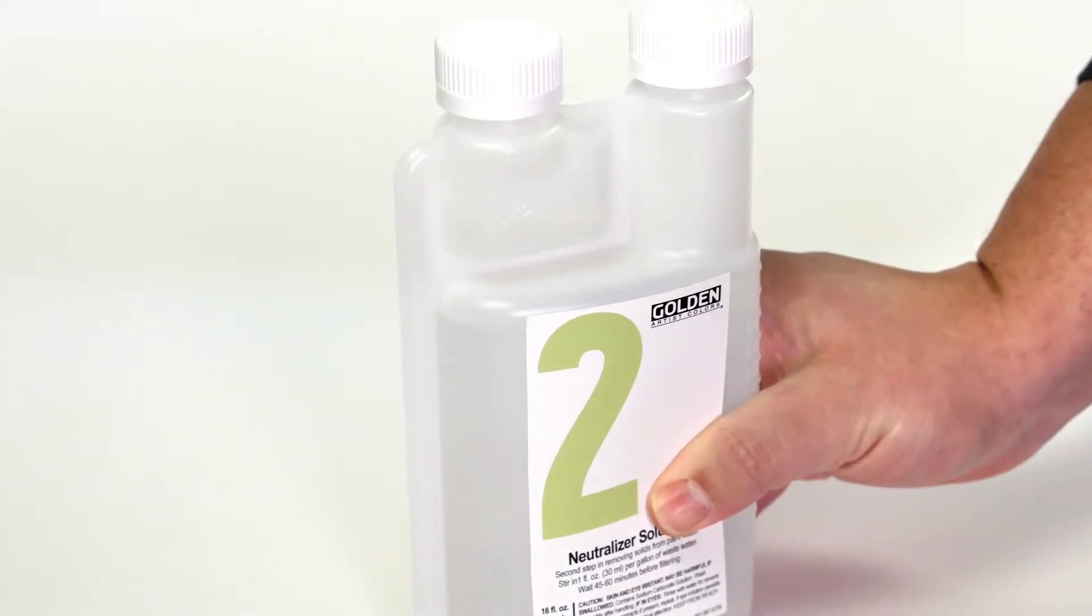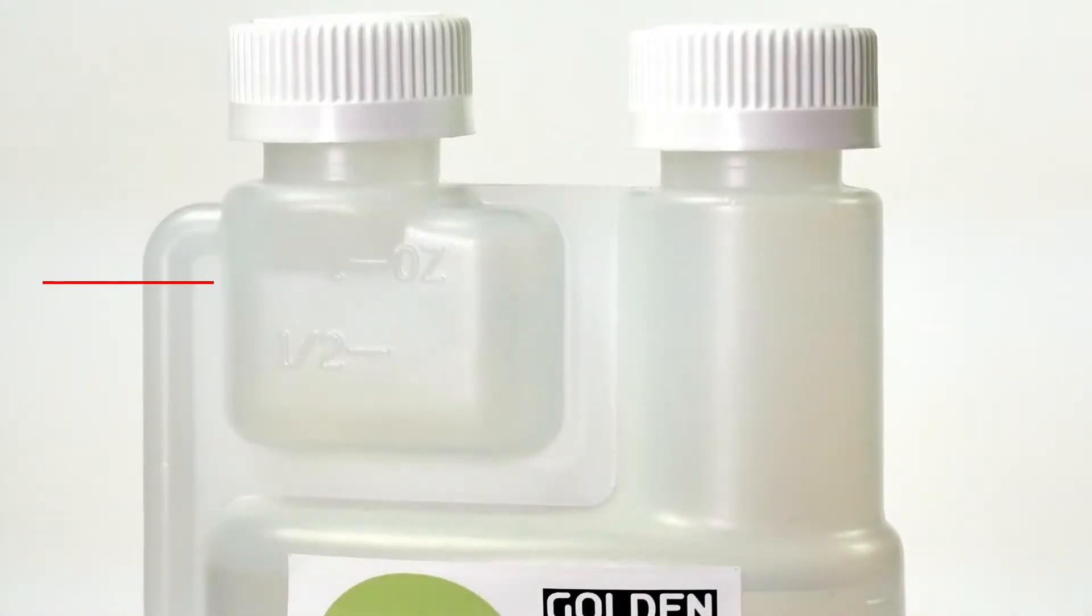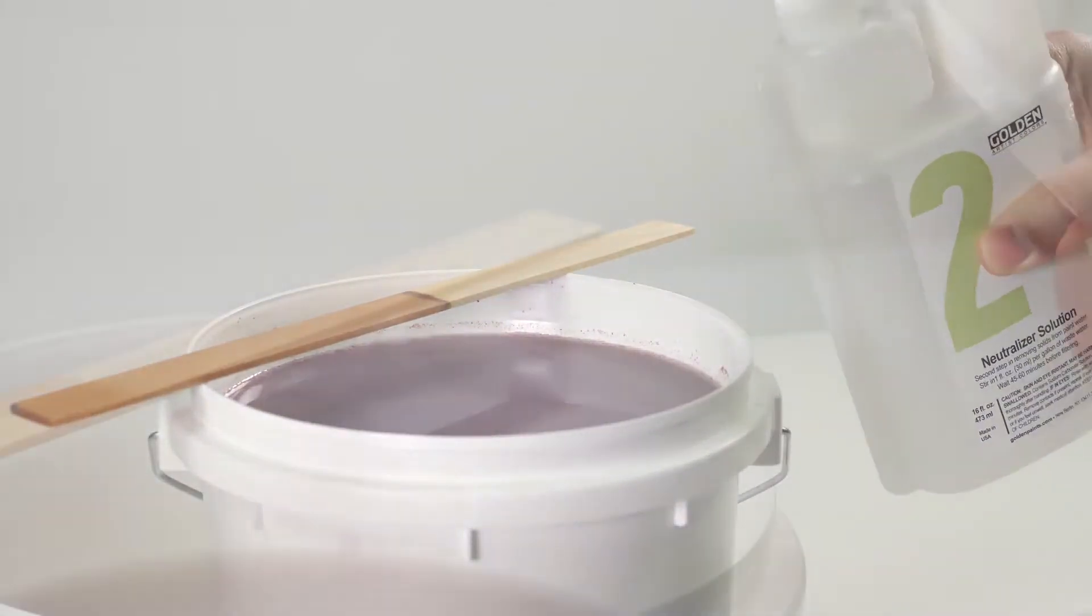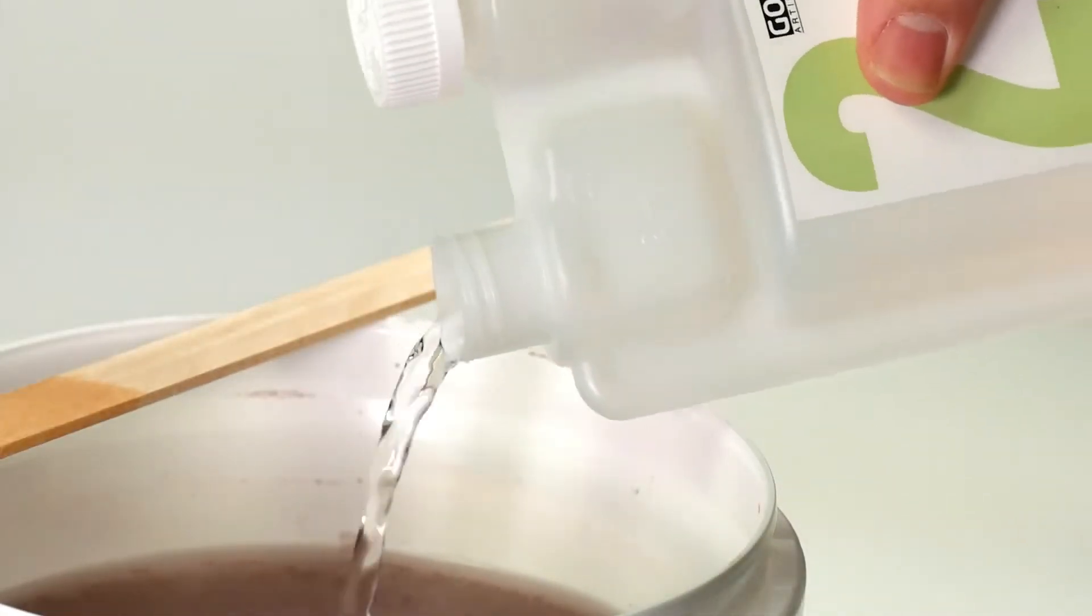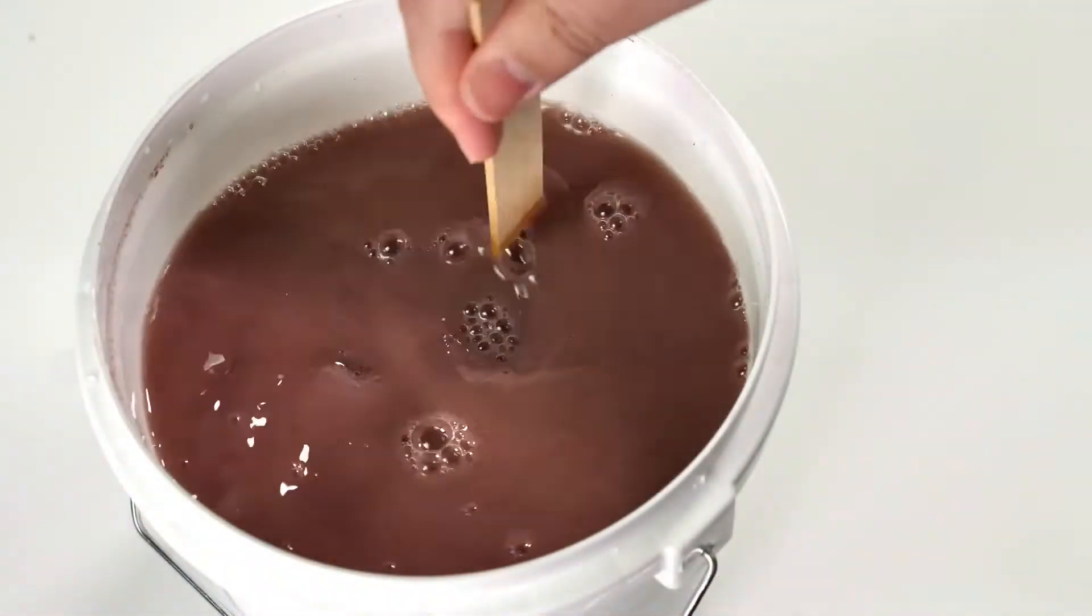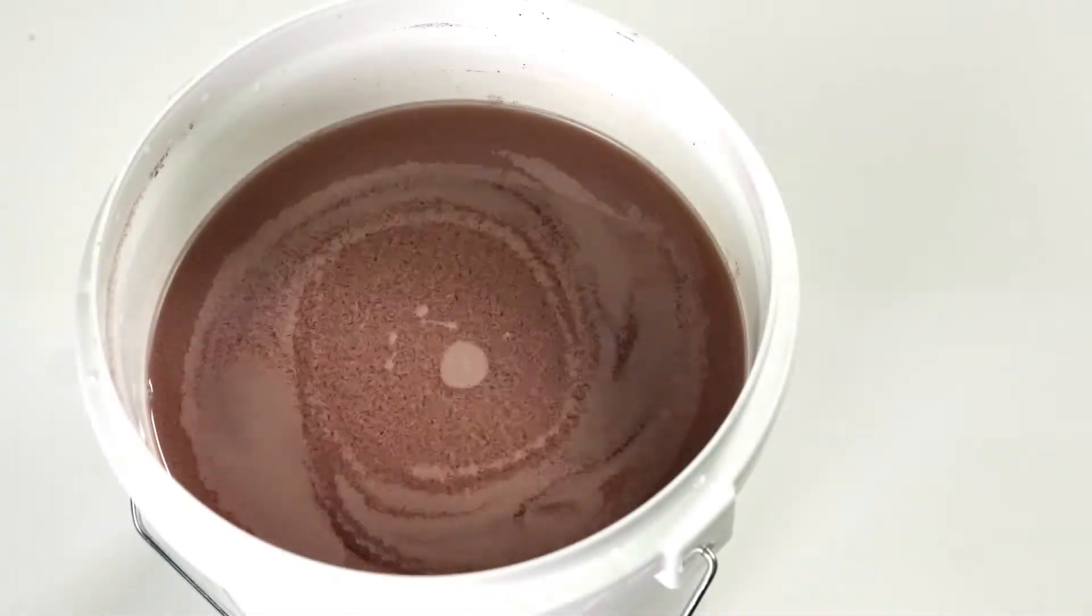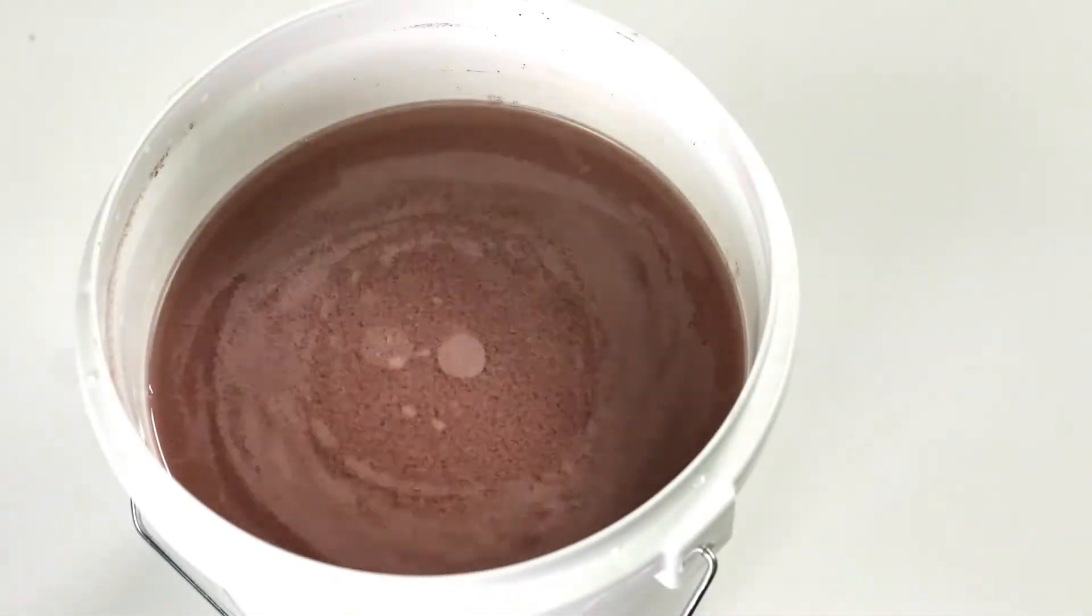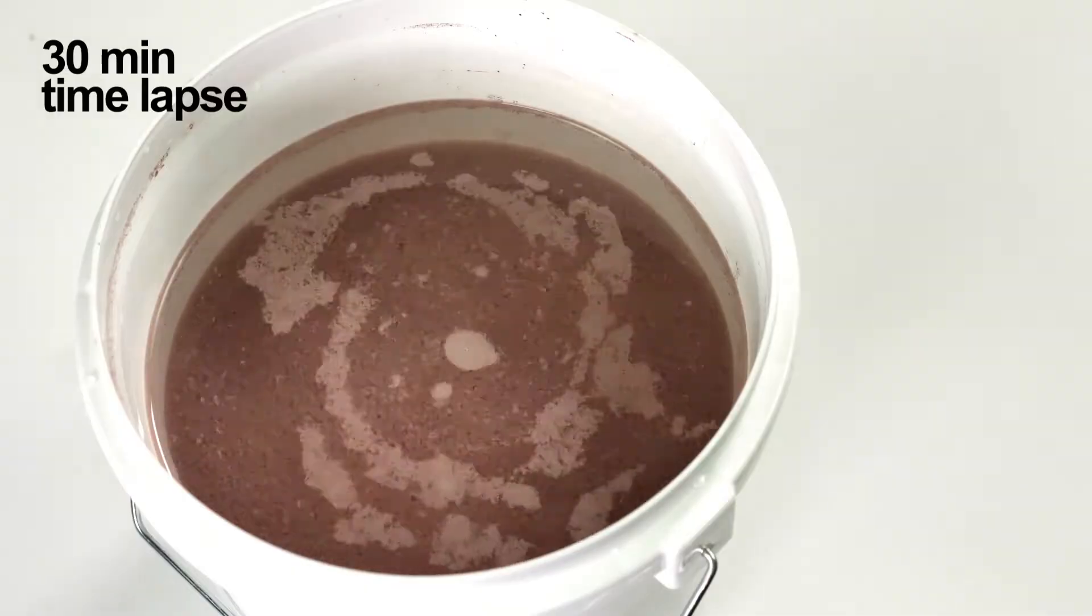Again stir solution two into the wastewater for a minute, then allow the mixture to sit for 15 minutes to an hour. The paint solids will slowly accumulate and sink in the bucket, and the water on top will begin to clarify.